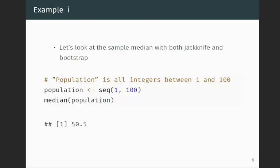Let's look at an example. We'll look at the sample median, for which jackknife doesn't work, and we'll see that Bootstrap gives a more accurate answer. We'll consider a finite population that we know completely so we can compute the actual population median. Consider the population of all integers between 1 and 100 — 100 observations in total — so the median is the average of the two middle observations: 50.5, the average of 50 and 51. That's the population parameter theta that we know exactly in this toy example.